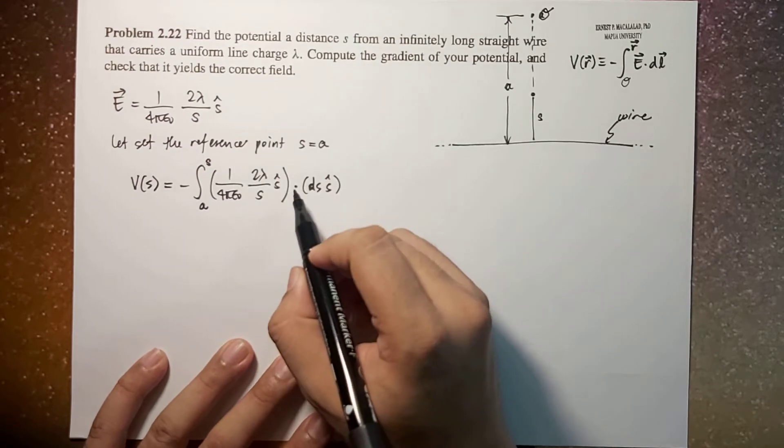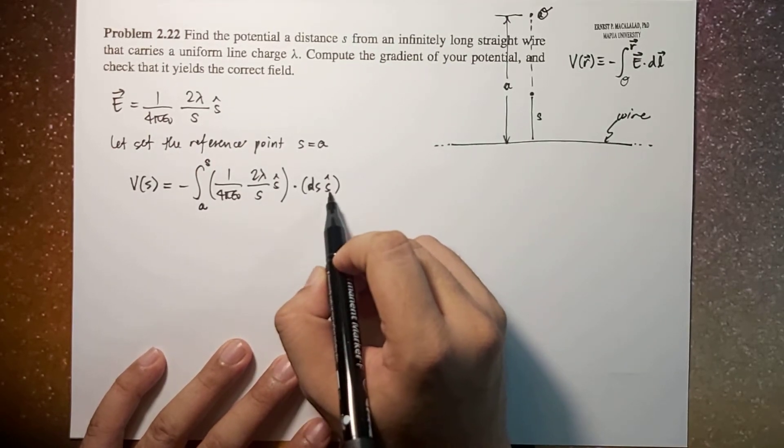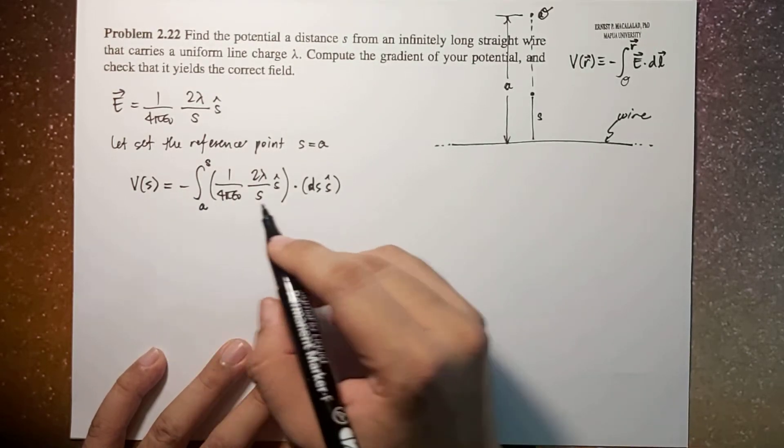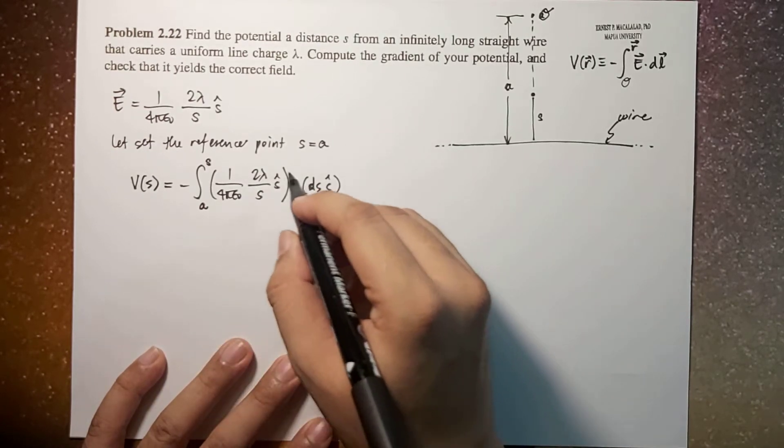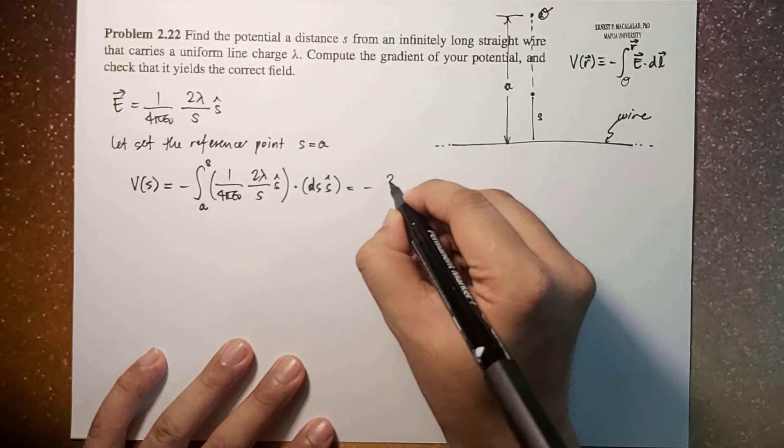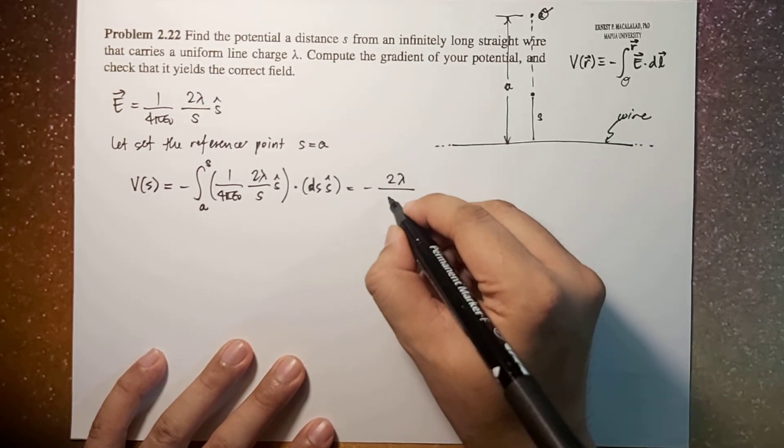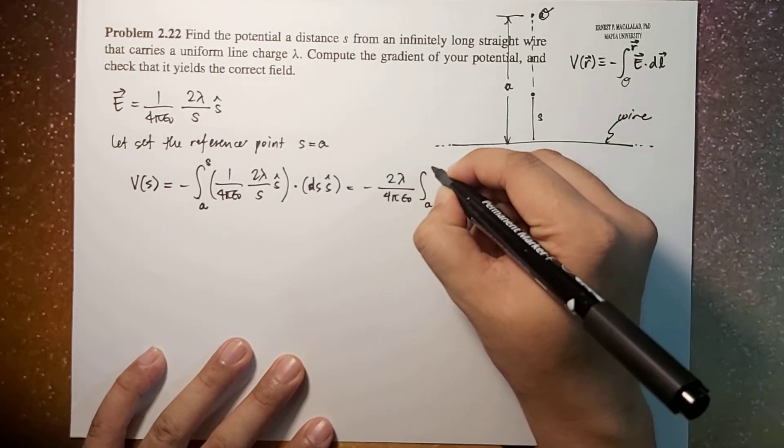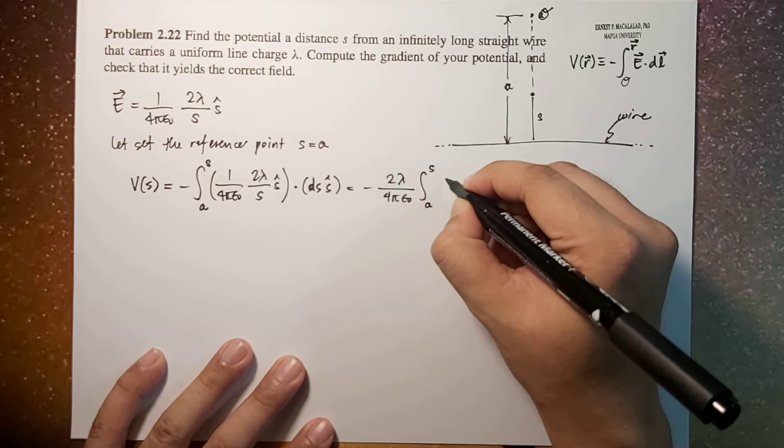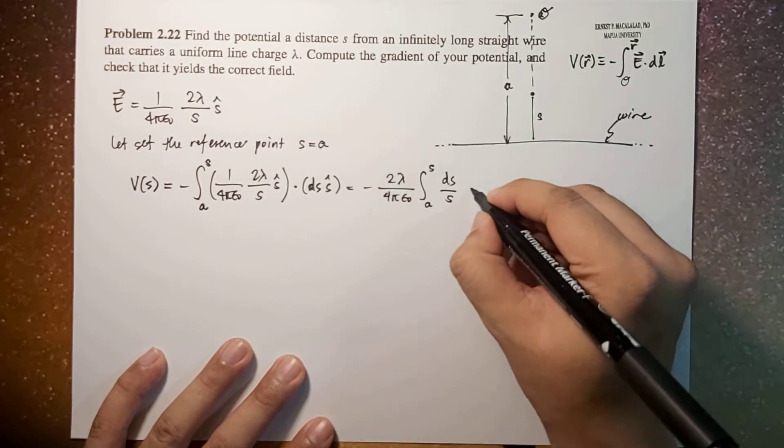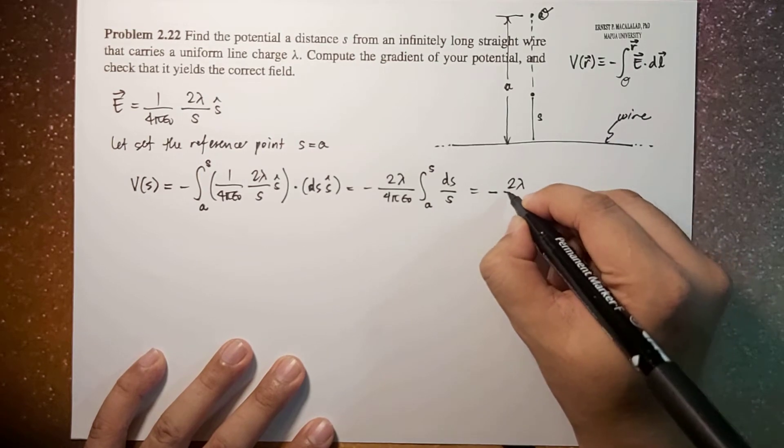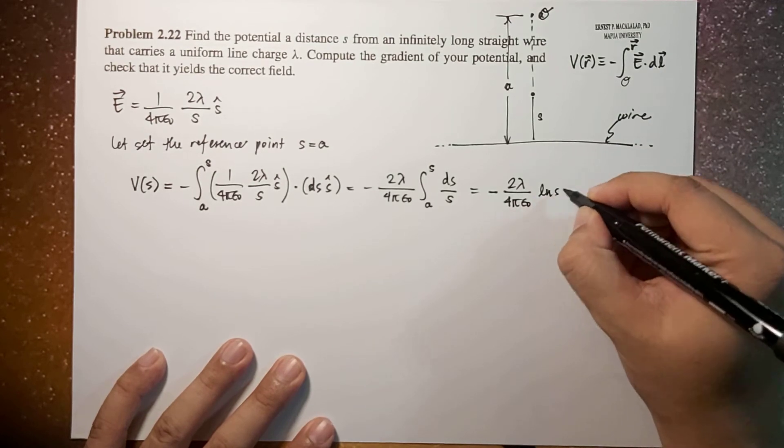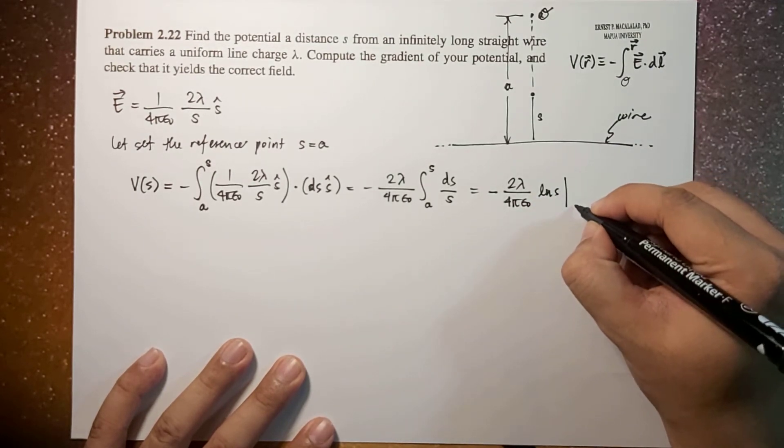Because this is a dot product, s hat is parallel to s hat so this becomes a simple multiplication. Taking out the constants here, so this becomes negative two lambda divided by four pi epsilon naught times the integral from a to s of ds over s, which is equal to negative two lambda over four pi epsilon naught times ln of s, which is evaluated from a to s.